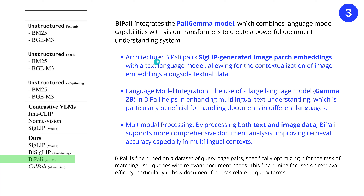We will bring this PaliGemma in and improve our system in the third step. We have now BiPali — this integrates the PaliGemma model, which means it combines language model capability with a vision transformer to create a much more powerful and better document understanding system. From the architecture, we pair a SigLIP-generated image patch embedding with a text language model, allowing for the contextualization of image embeddings alongside textual data. The large language model is Gemma 2B.